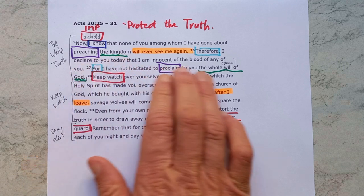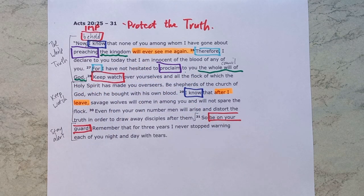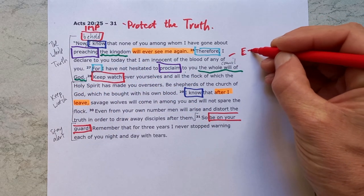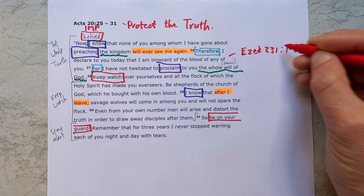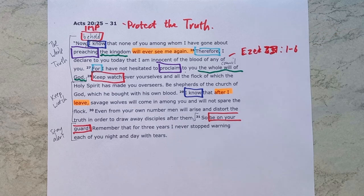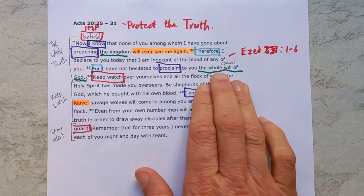And because he has preached the kingdom and proclaimed the whole will of God, he's able to say in verse 26, "therefore I declare to you that I'm innocent of the blood of any of you." This is drawing on imagery from Ezekiel 33, verse 1 to 6, where the watchmen were being spoken to. They were told that if they didn't warn the people, the blood of the people would be on their hands. Blood means the responsibility for the judgment that they will face will end up on those watchmen. Paul is saying, for himself as a watchman of the truth, their blood won't be on his hands, because he's warned them and told them everything they need to know.